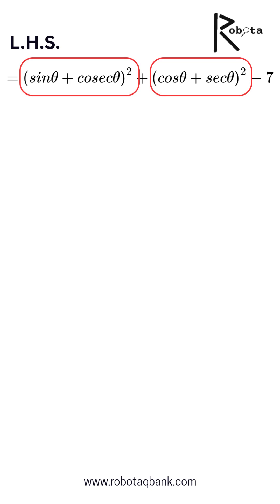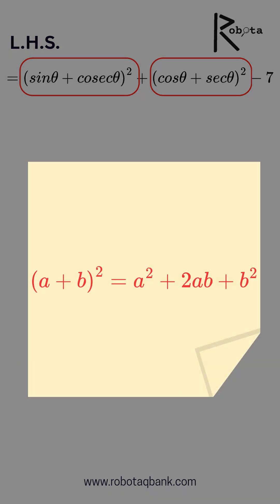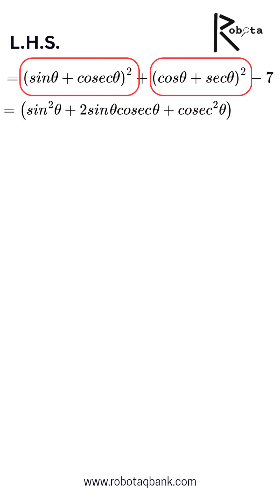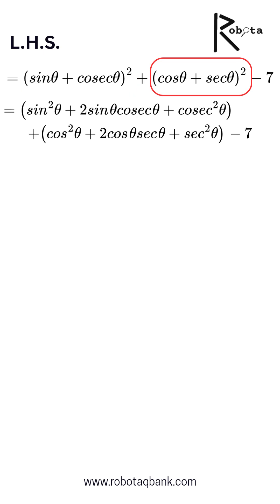Now we expand both squared terms. The first part becomes sin²θ + 2·sinθ·cosecθ + cosec²θ. The second part becomes cos²θ + 2·cosθ·secθ + sec²θ.